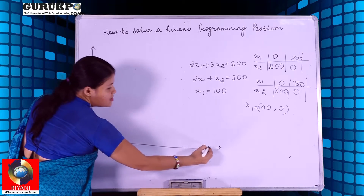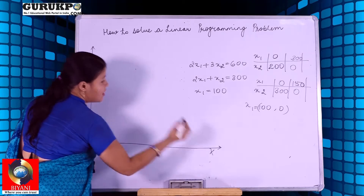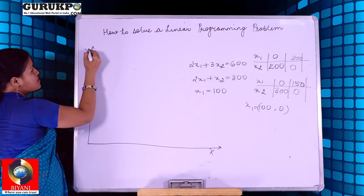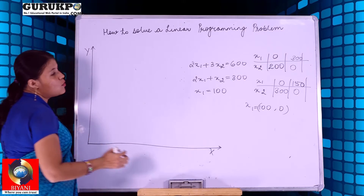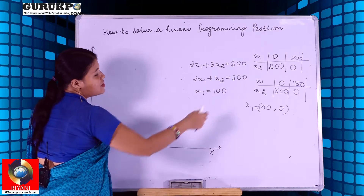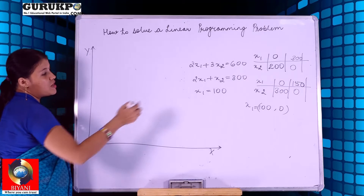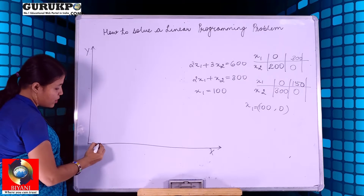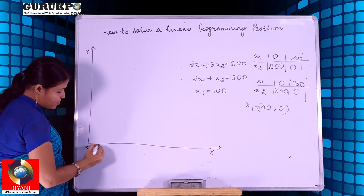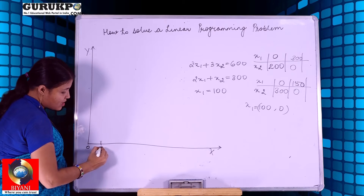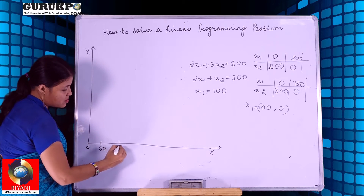This is the x-axis and this is the y-axis. We take the scale according to the points we have calculated — I am taking a scale of 50 units per division.